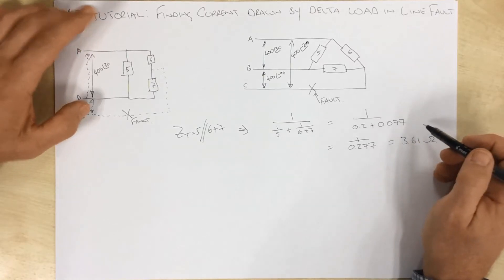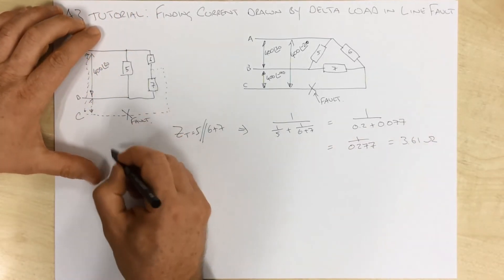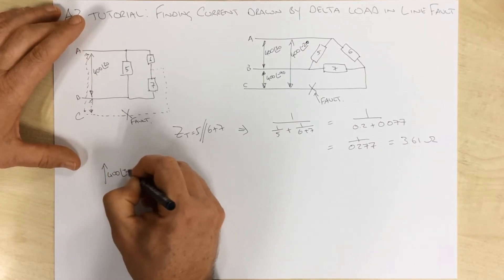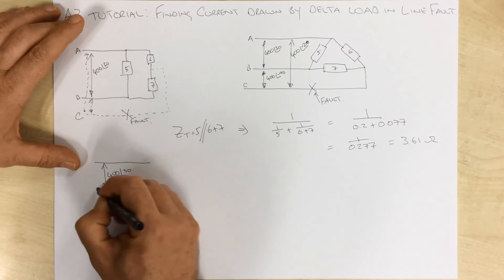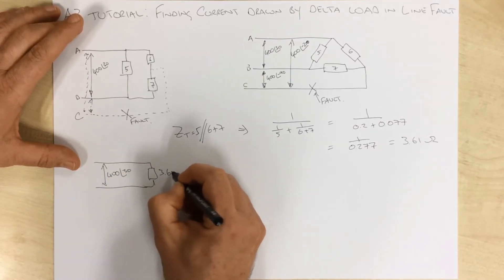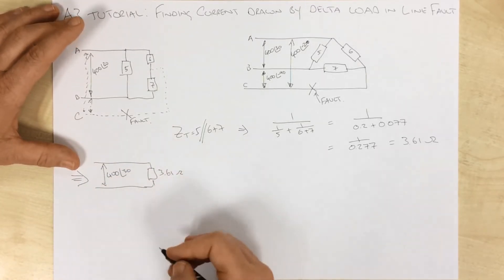Okay, now back to the question. How much current's being drawn? So we now know that our equivalent circuit is essentially our 400 volts at 30 across an impedance of 3.61 ohms. That's easy to solve.